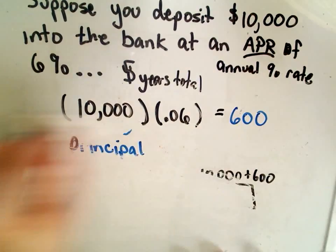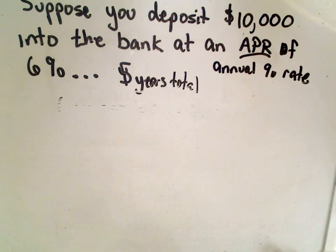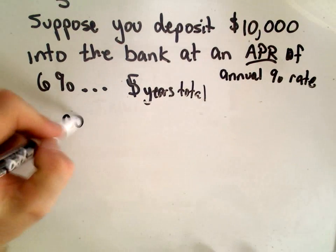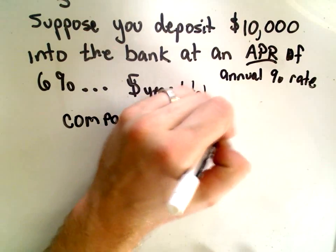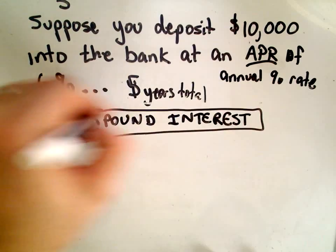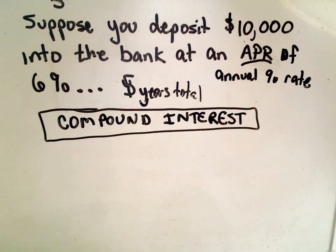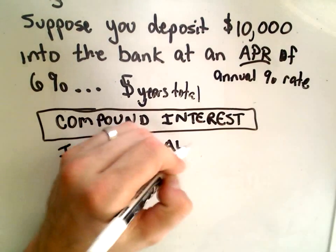That is simple interest. The formula would be: interest equals principal times rate times number of years. Now let's look at the more interesting and probably realistic case in the real world — compound interest. Credit cards, mortgages, student loans — most interest on these accrues via compound interest, compounded either annually or numerous times during the year. The idea with compound interest is that your interest also earns interest.